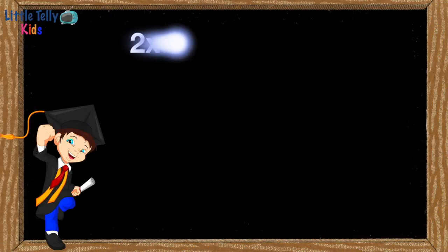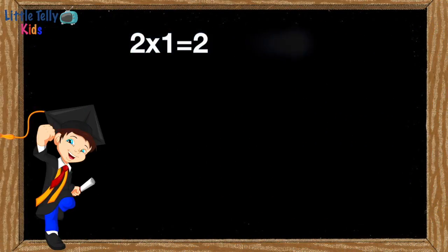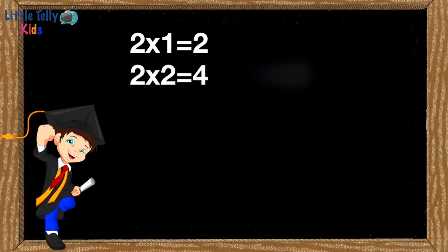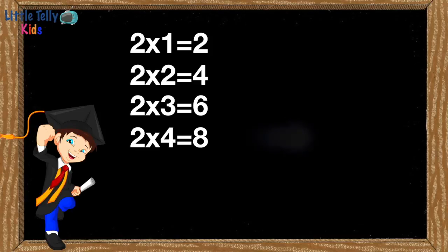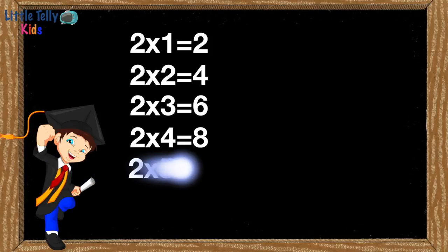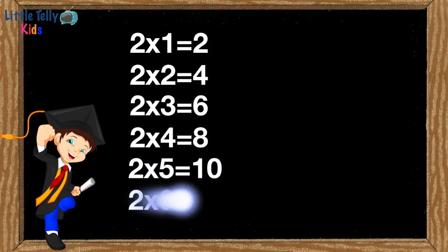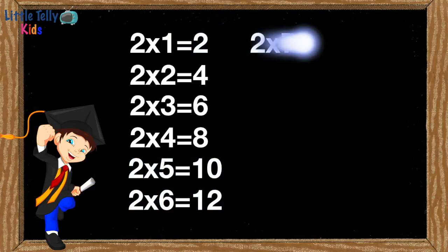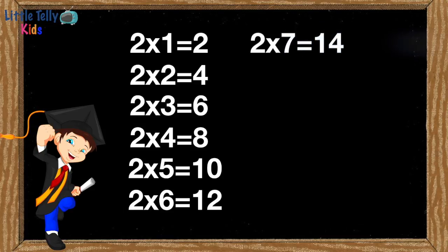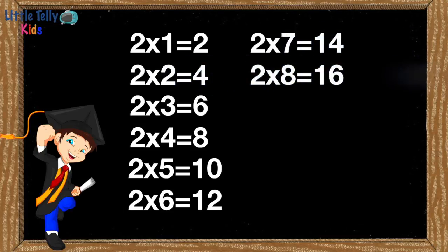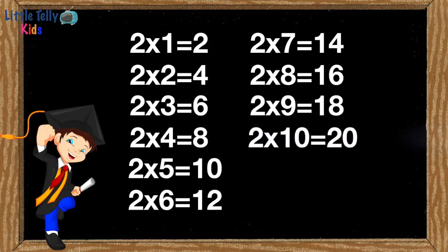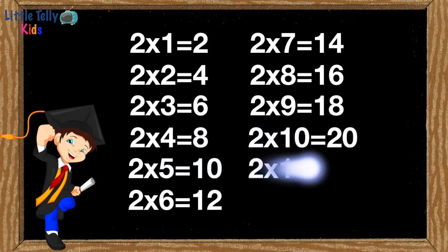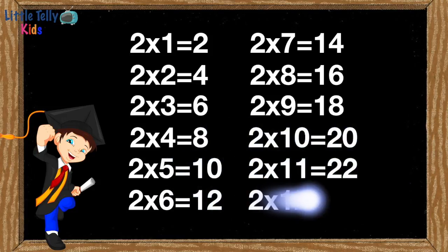2 1s are 2, 2 2s are 4, 2 3s are 6, 2 4s are 8, 2 5s are 10, 2 6s are 12, 2 7s are 14, 2 8s are 16, 2 9s are 18, 2 10s are 20, 2 11s are 22, 2 12s are 24.